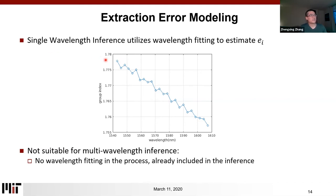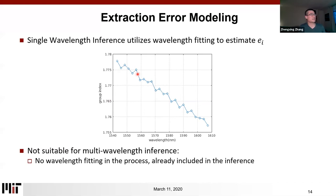For single-wavelength inference, a simple approach is to fit these curves and use the fitting result for the extraction. From the fitting, we also get an estimation of the noise level. So we have a way to know how much noise there is when we estimate the value. This works for the effective index and coupling coefficient as well.